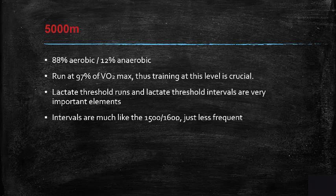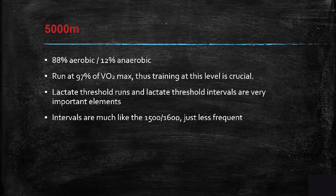The 5K is 88% aerobic and 12% anaerobic, run at about 97% of VO2 max — training at this level is crucial. In California community colleges, cross-country athletes compete at 5K for women and about four miles for men. The lactate threshold runs and intervals are very important. Building lactate threshold capacity must be managed carefully — increasing intensity too soon or too high early means athletes won't be able to work through it appropriately. Intervals are similar to 1500/1600 meter repeats, just less frequent.